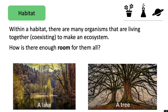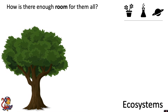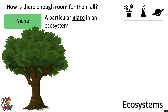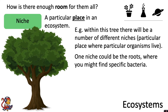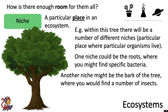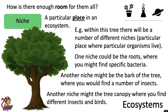How is there enough room for them all? Well, we're going to look at a new word: a niche. A niche has two definitions and we're going to start with the first one. A niche could mean a particular place in an ecosystem. So for example, if there are many different species of organisms living in this tree, within this tree there will be a number of different niches — particular places where a particular organism lives. For example, one niche could be the roots where you might find specific bacteria. Another niche might be the bark of the tree where you would find a number of insects. And another niche might be the tree canopy where you might find different insects and birds.